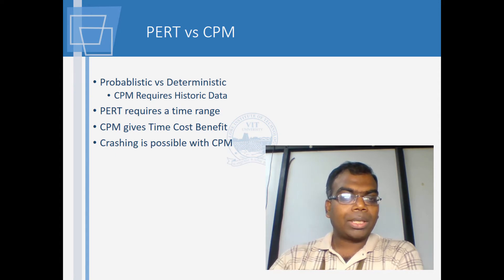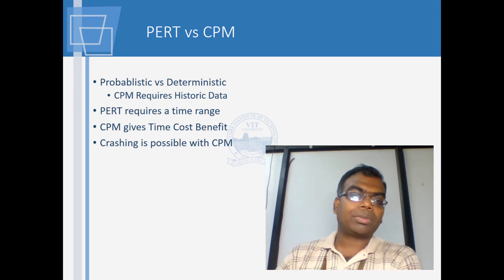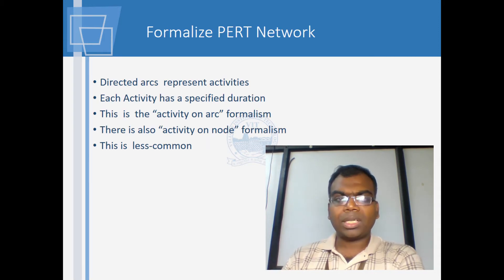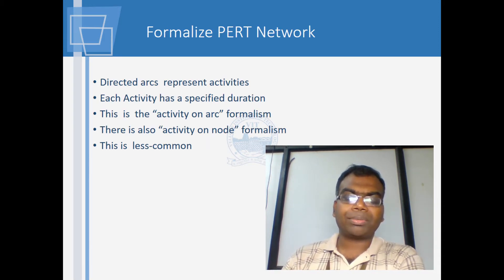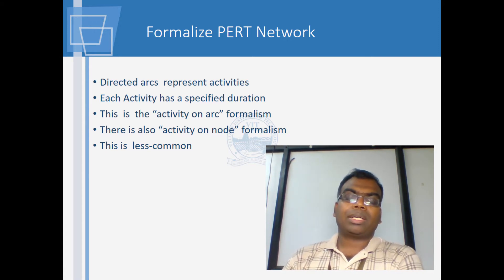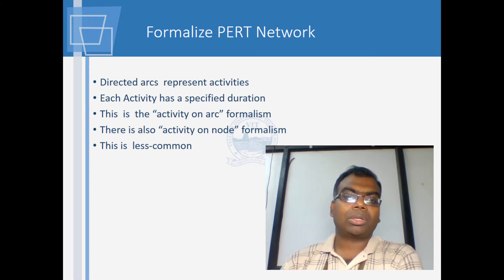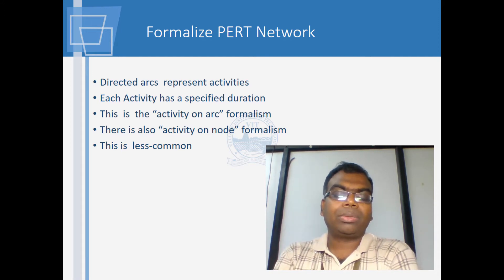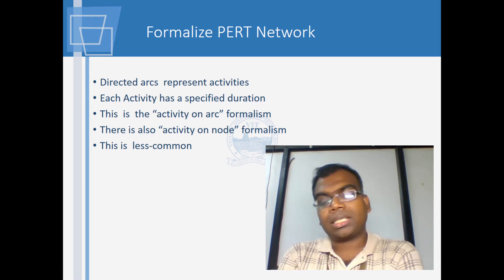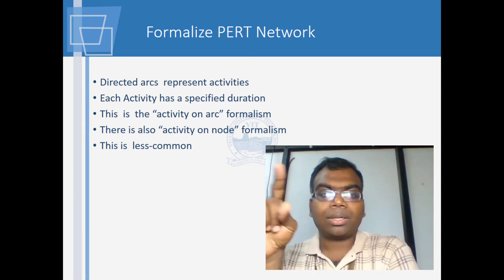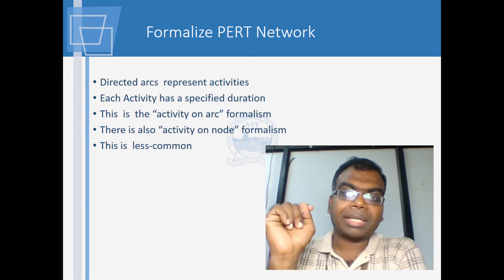CPM can give you the time-cost benefits and also does crashing. In the PERT network, we will be looking at arrows which represent activities. There are two kinds, just as in CPM: you have activity on the arc or line, and then you have activity on the node.